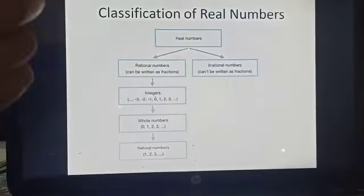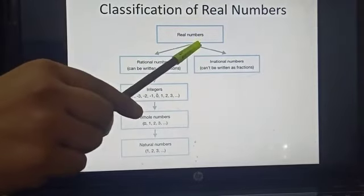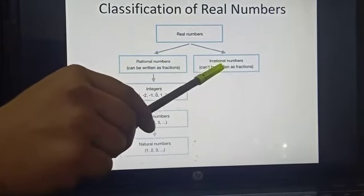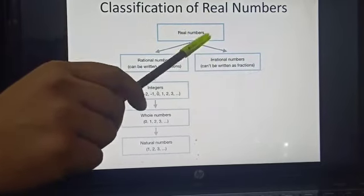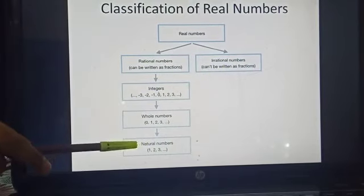The combination of rational and irrational numbers gives you real numbers. Real numbers are those numbers which are the combination of rational and irrational numbers. As we studied in class 9, any real number can be represented on the number line. Real numbers are classified into two types: rational numbers and irrational numbers.